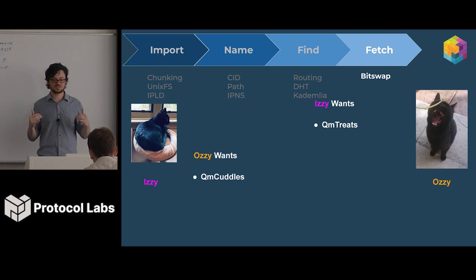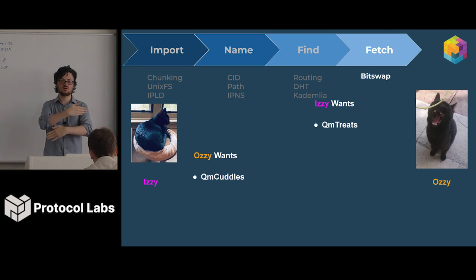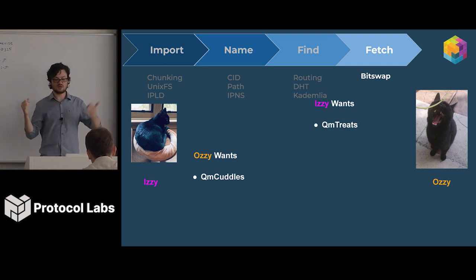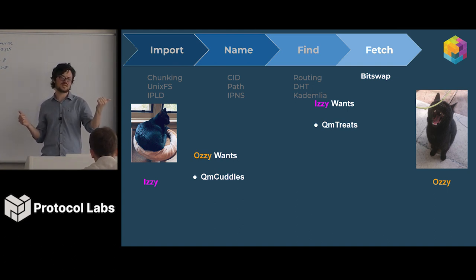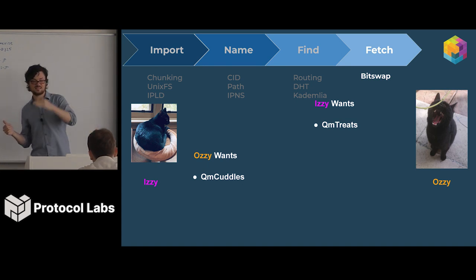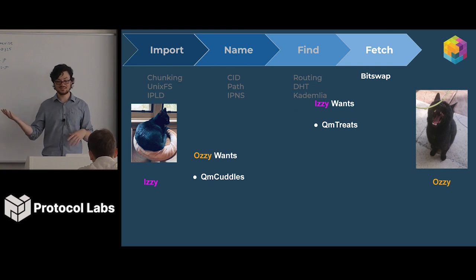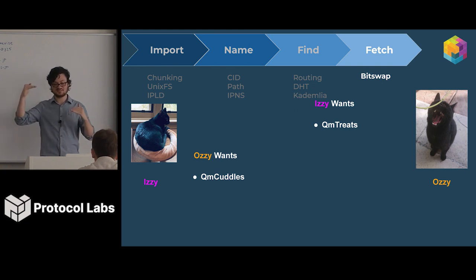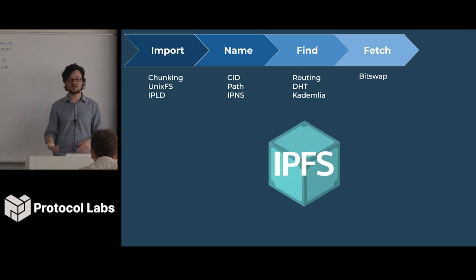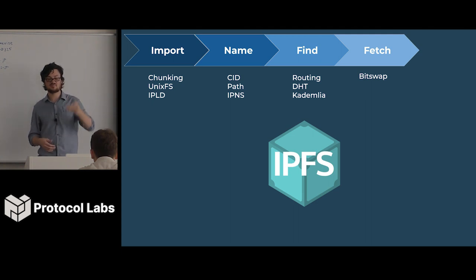One interesting property about BitSwap is it's not a request-based system. You don't ask for something and get a response back. You tell someone else what you're looking for and eventually they give it to you. So Izzy will remember that Ozzy still wants cuddles, and for the future she'll become more cuddly. Izzy may finally give Ozzy cuddles, but for now she doesn't have cuddles, so she'll send nothing. That was BitSwap. We've gone through importing files, naming them, finding them, and fetching them — that's how IPFS works.